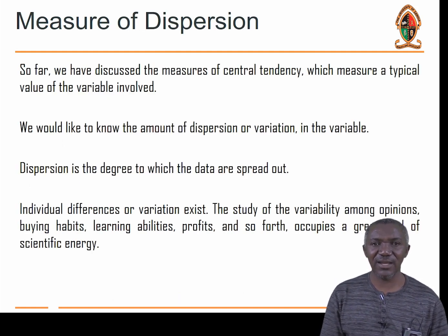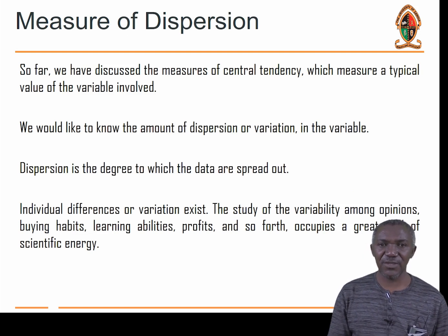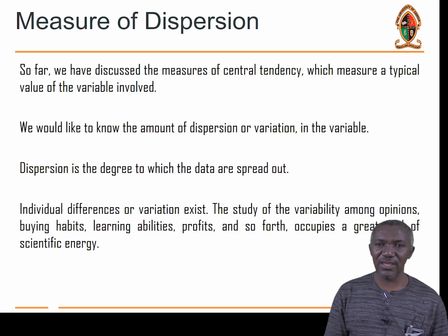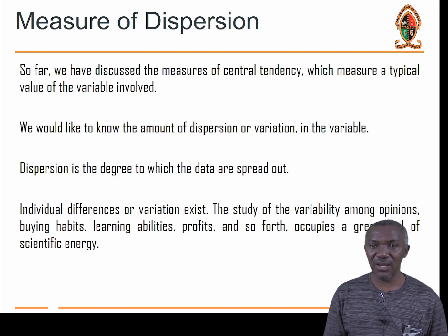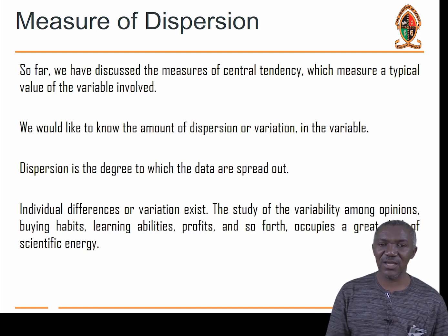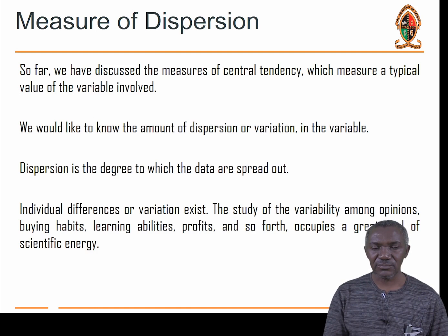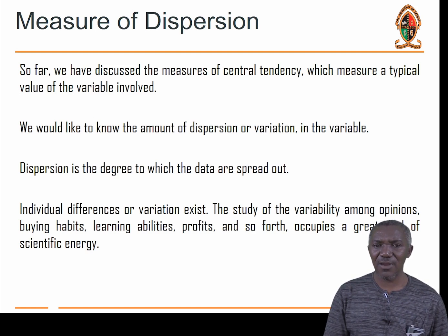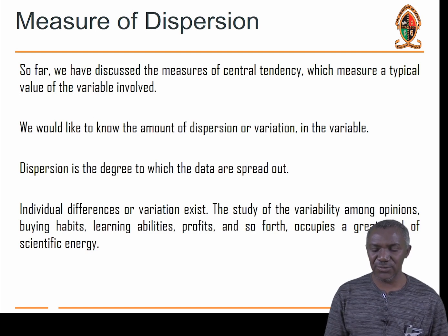Let us now look at dispersion — the measure of dispersion. We have discussed the measure of central tendency and how we estimate the most likely value using the mean, median, and mode. But we also need to know how the dataset is spread — what is the variability, and how different are the numbers within this particular distribution. We use the measure of dispersion for this.